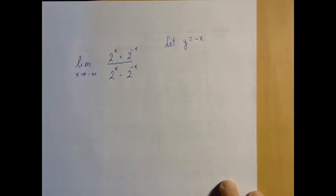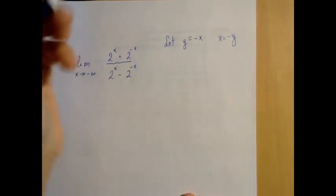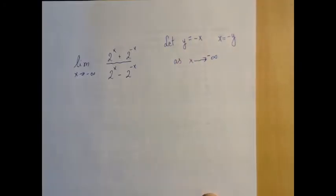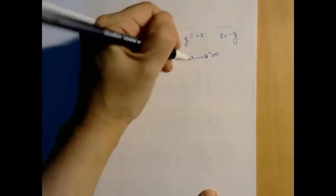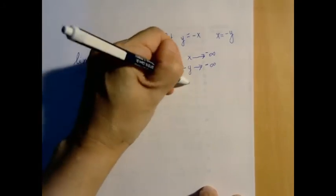So let's say let y be negative x, and then of course x is negative y. So that means that everywhere where we see x, we're going to write negative y. And as x approaches negative infinity, well x is negative y, so negative y approaches negative infinity, that is the same as y approaches infinity.